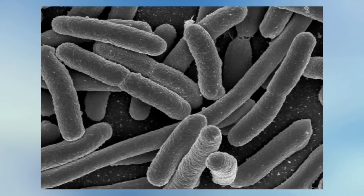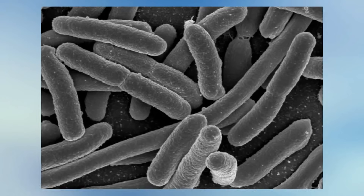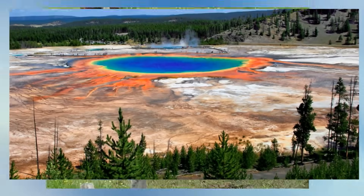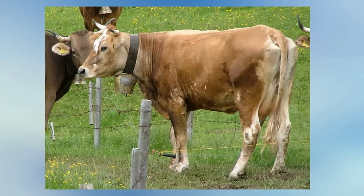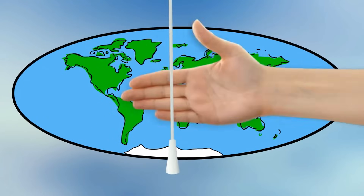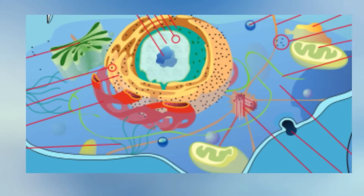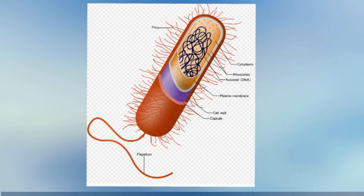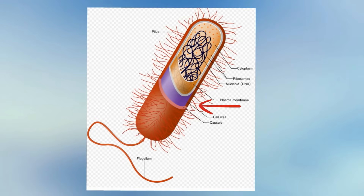The kingdom Monera consists entirely of single-cell organisms. Members of this kingdom are found almost everywhere on Earth — in hot springs, cow stomachs, and almost every surface on Earth. All members do not have a nucleus or membrane-bound organelles, so they are classified as prokaryotes. They do have a cell wall, genetic material, cytoplasm, and ribosomes.